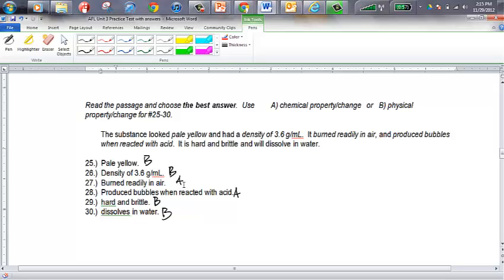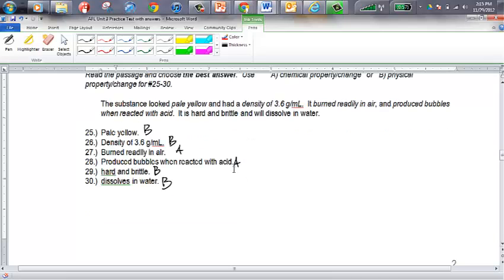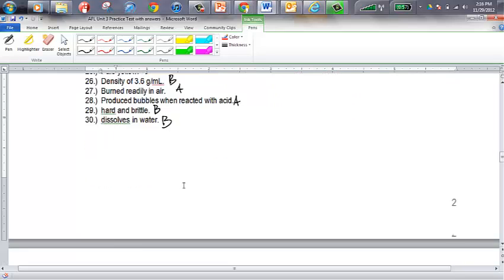Burning readily in air, that would be a chemical reaction, so that's a chemical change. And if something is very combustible, that's a chemical property that it has. If it produces bubble when reacting with acid, that's of course an indication that a chemical reaction is occurring, so that is A. If something is hard and brittle rather than soft and bendable, that's a physical property. You don't have to do any chemistry to figure out whether or not something is hard. And whether or not it dissolves, that again is a physical property.